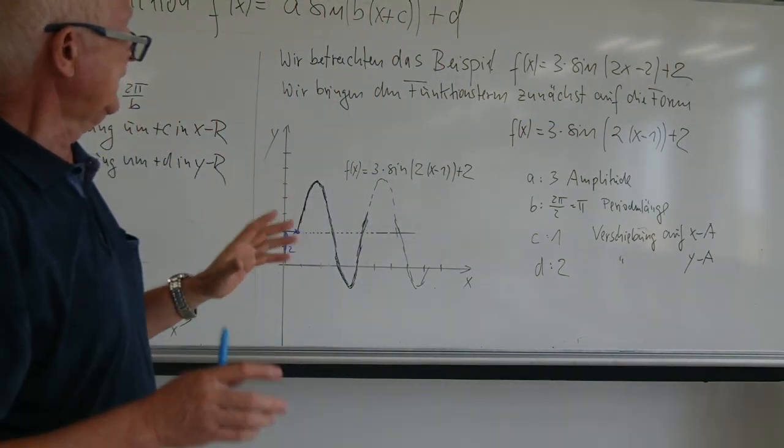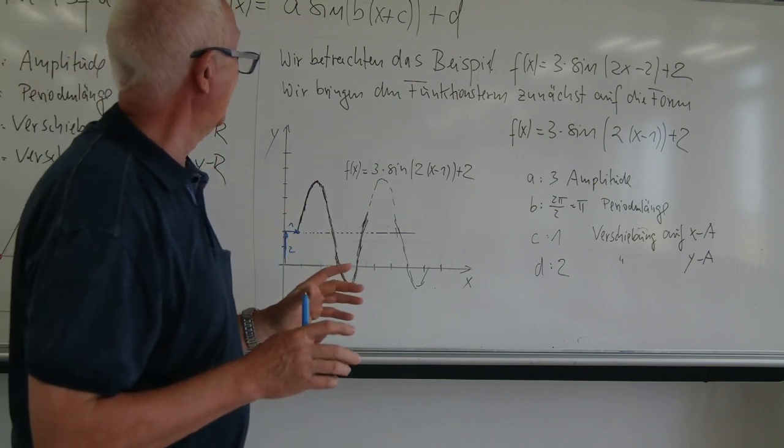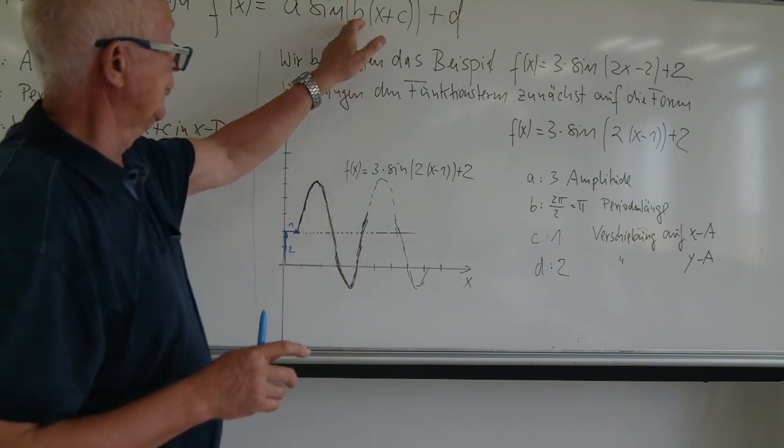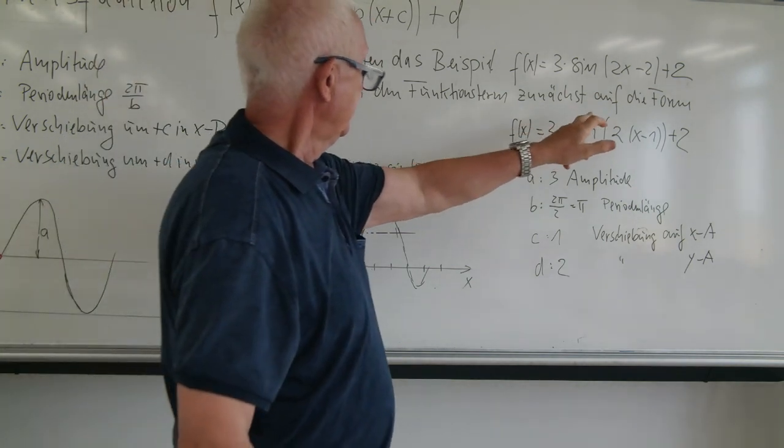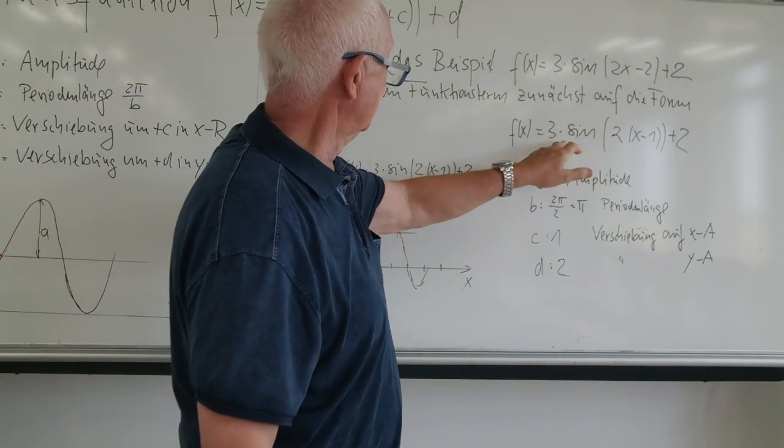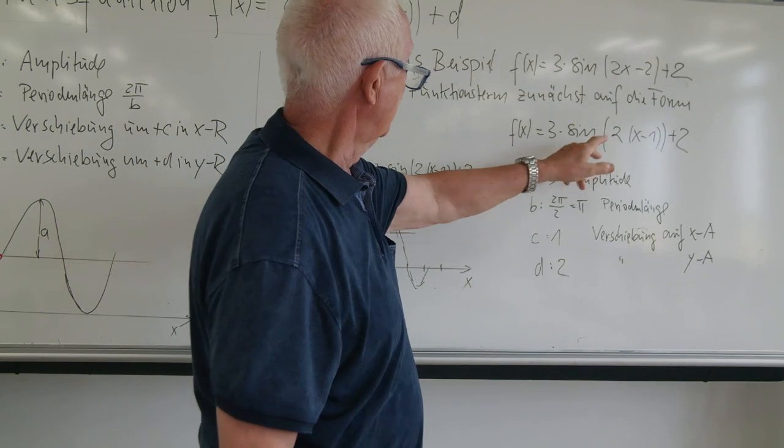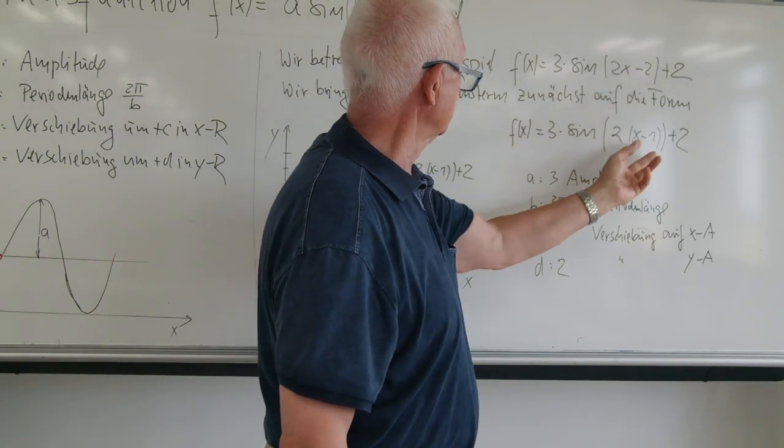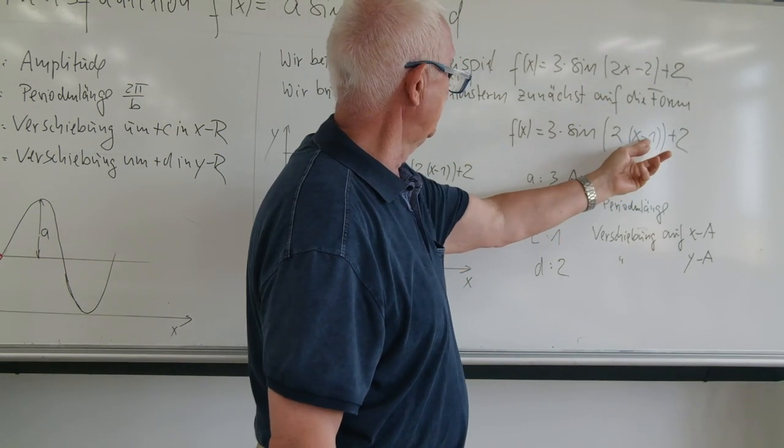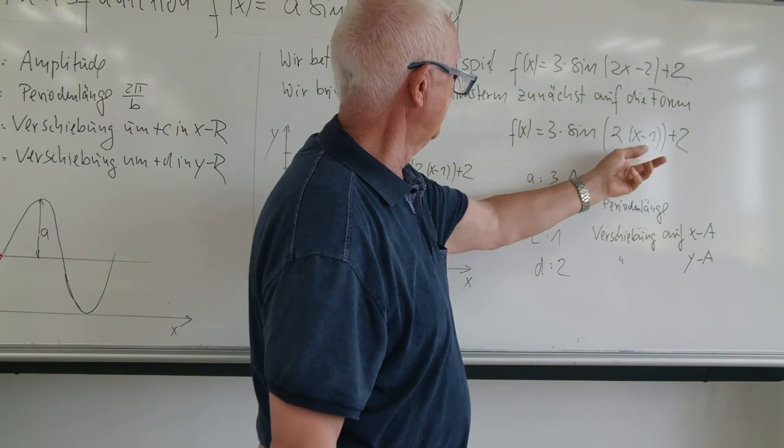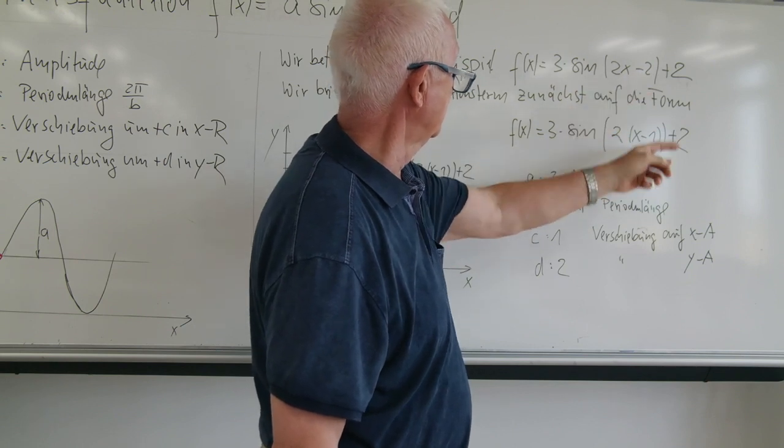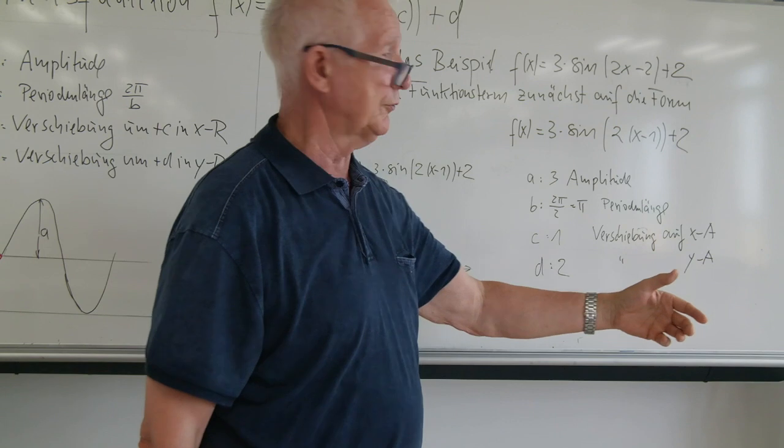Wir bringen diesen Funktionsterm erst auf eine andere Form, und zwar auf diese Form, die wir hier haben. Deshalb kann ich schreiben f von x gleich 3 mal Sinus. Und für diesen Term schreiben wir jetzt 2 mal x minus 1. Wenn ich das ausmultipliziere, bin ich wieder bei dem, plus 2. Ich glaube, das ist eindeutig.